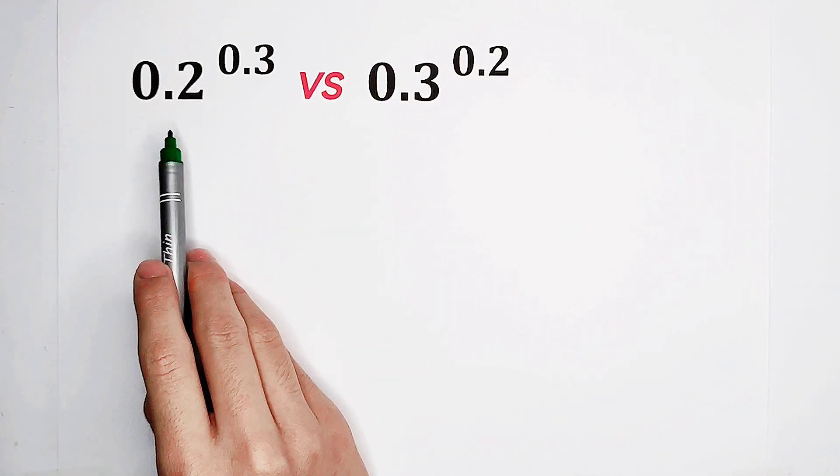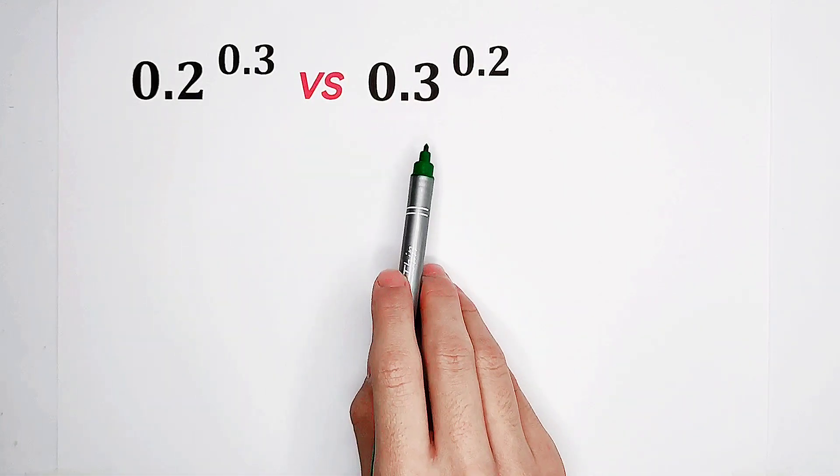Which is larger, 0.2 to the power of 0.3, or 0.3 to the power of 0.2?